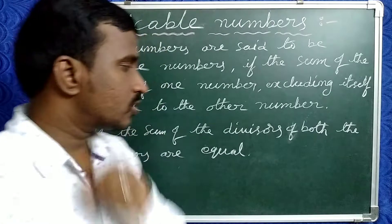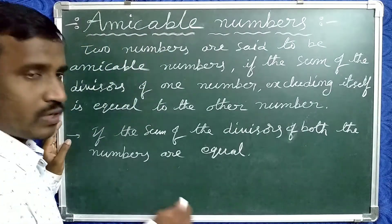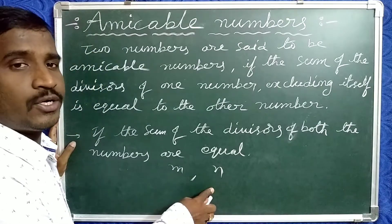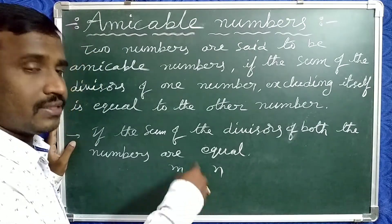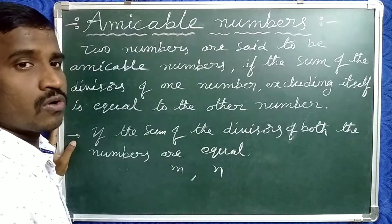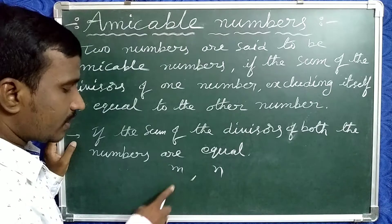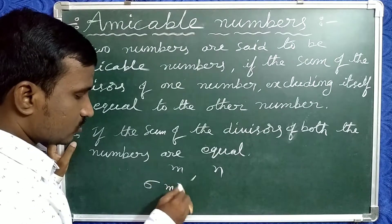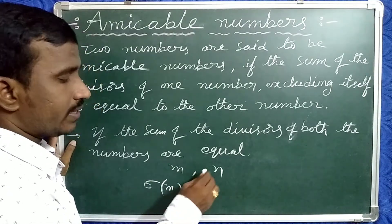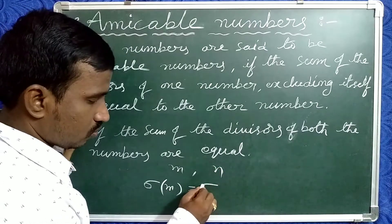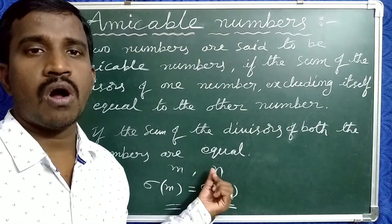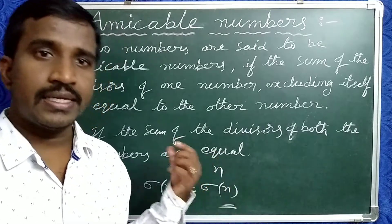Suppose we take two numbers m and n. These two are said to be amicable numbers. Then the sum of all divisors of m, denoted by ρ(m), equals the sum of all divisors of n, denoted by ρ(n). If this holds, then m and n are called amicable numbers.